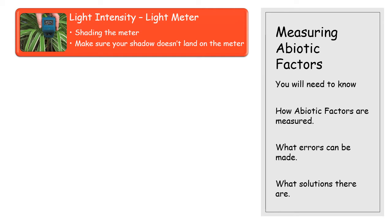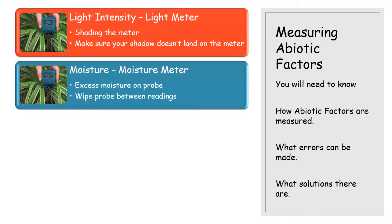One thing you could do by accident with a light meter is shade it — you can stand and create a shadow over it. A tree normally in that environment shading the meter is standard, but you standing there shading it will cause a problem. So you need to make sure your shadow does not land on the meter, and therefore you're taking an accurate reading.